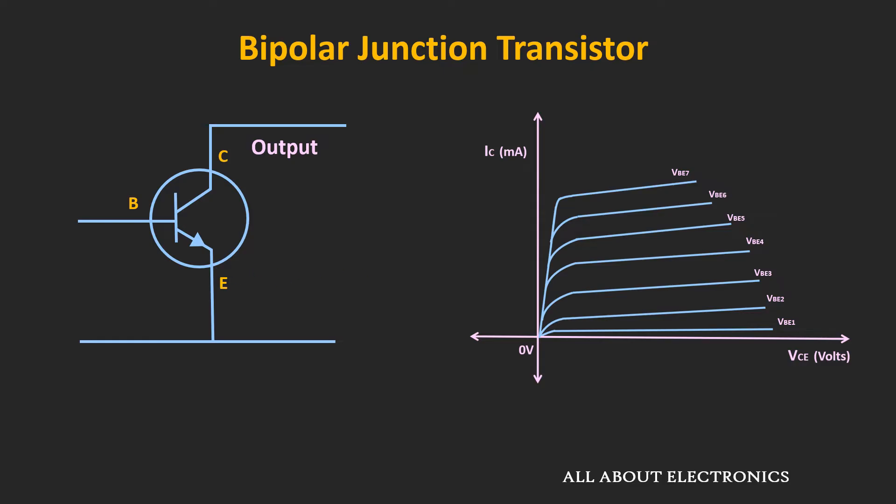But actually, there is some slope. That means as we increase the voltage Vce, the collector current also slightly increases. So let's understand the reason behind it.